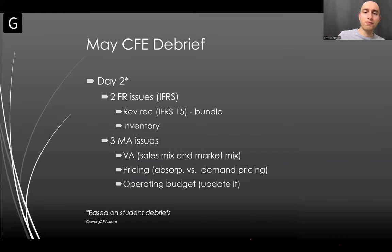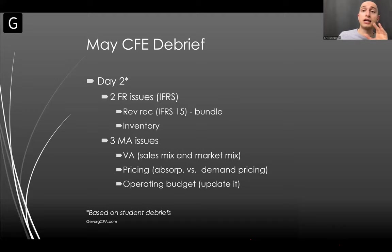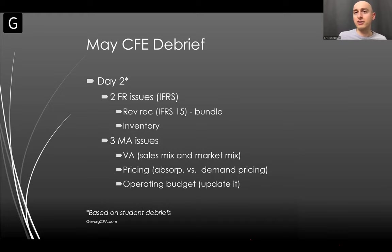Here are the two FR issues that came up. It was a revenue recognition issue — a book publishing company thinking of selling books standalone and as a bundle with online courses. They gave the bundle price and you had to discuss performance obligations, going through the five steps in IFRS 15. The trick was that they're not two separate POs because the case facts clearly said they cannot be sold separately. The second AO was on inventory — the appendix was almost one and a half pages and it was confusing whether to write down or measure cost.